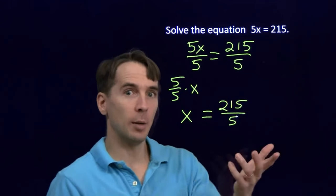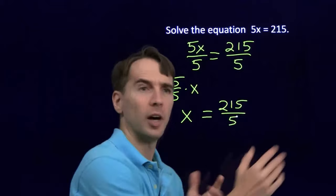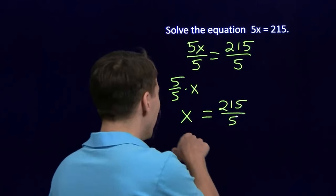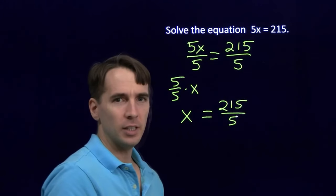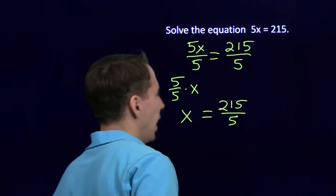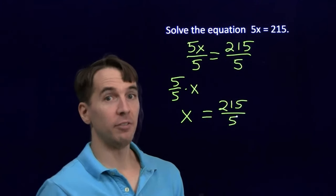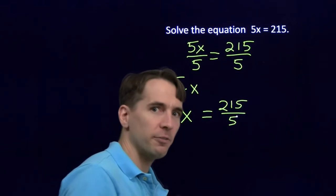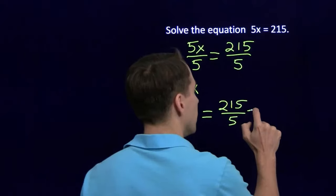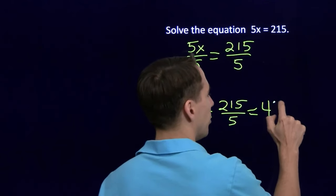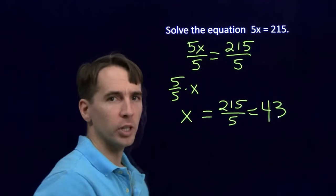I mean, say we have 3 times 4 is 12. That means 3 is 12 divided by 4. It's kind of the same idea here. x is 215 divided by 5. You just divide that out. 200 divided by 5, well, that's 40. So 205 divided by 5 is 41. 210 divided by 5 is 42. 215 divided by 5 is 43.